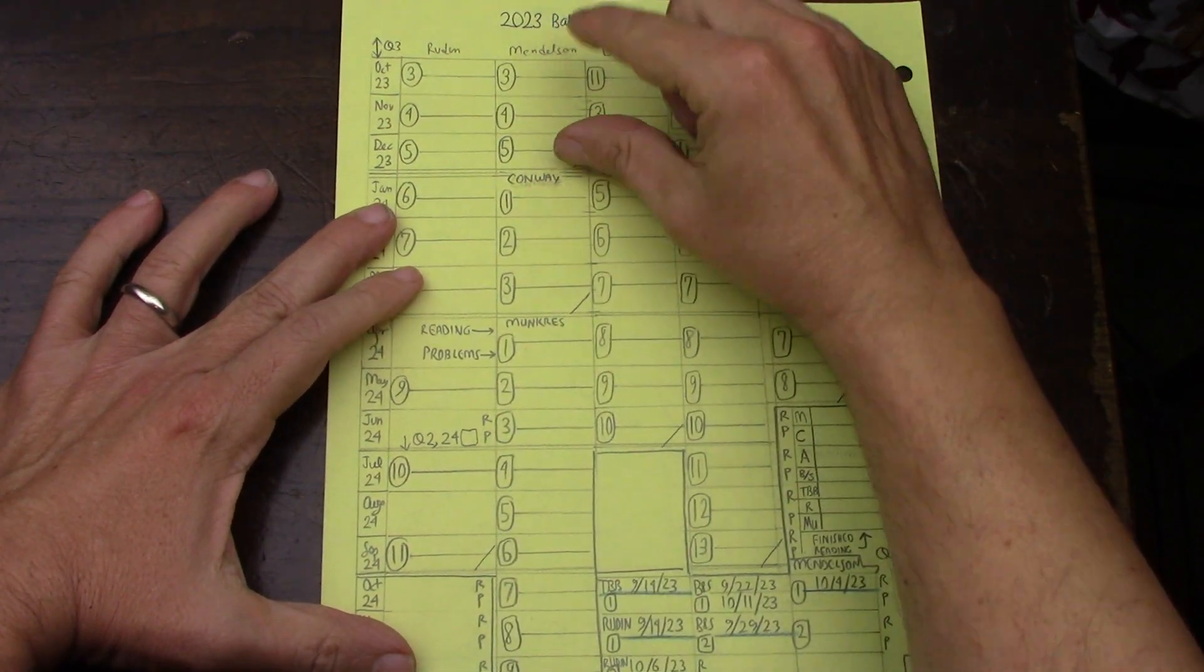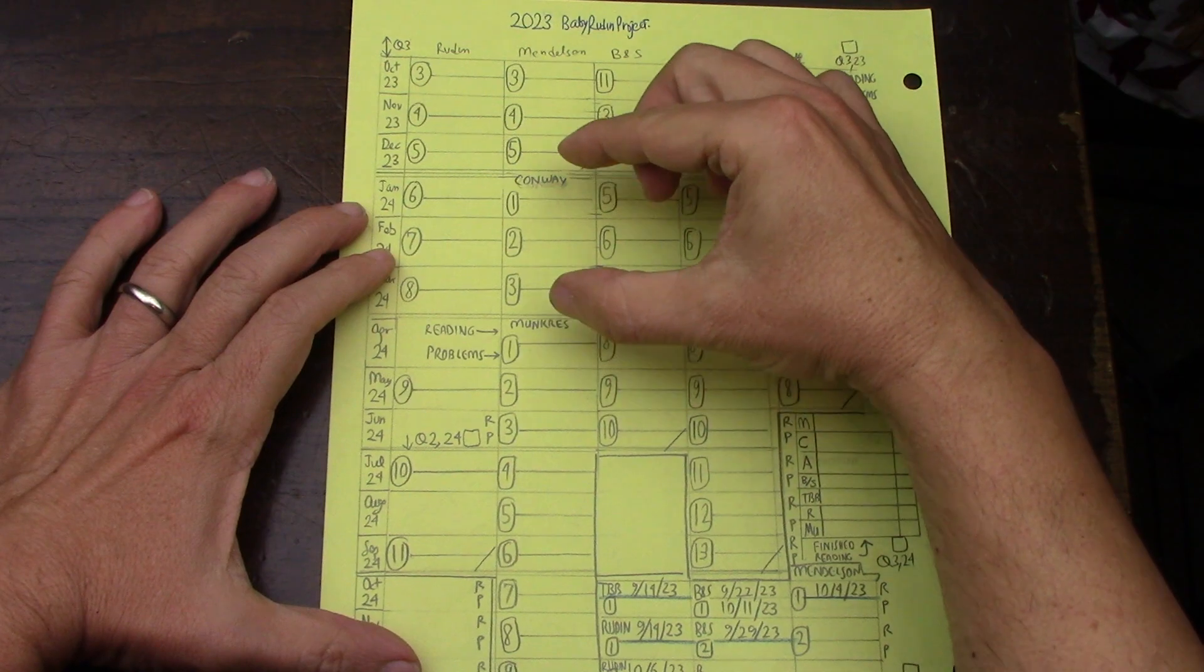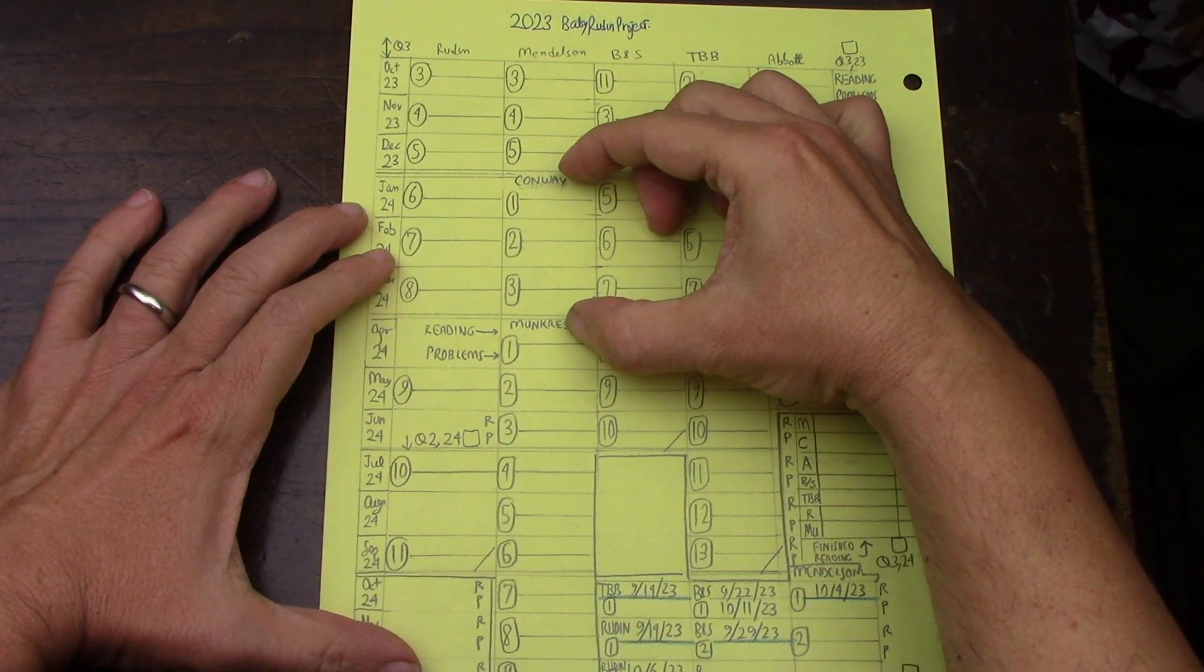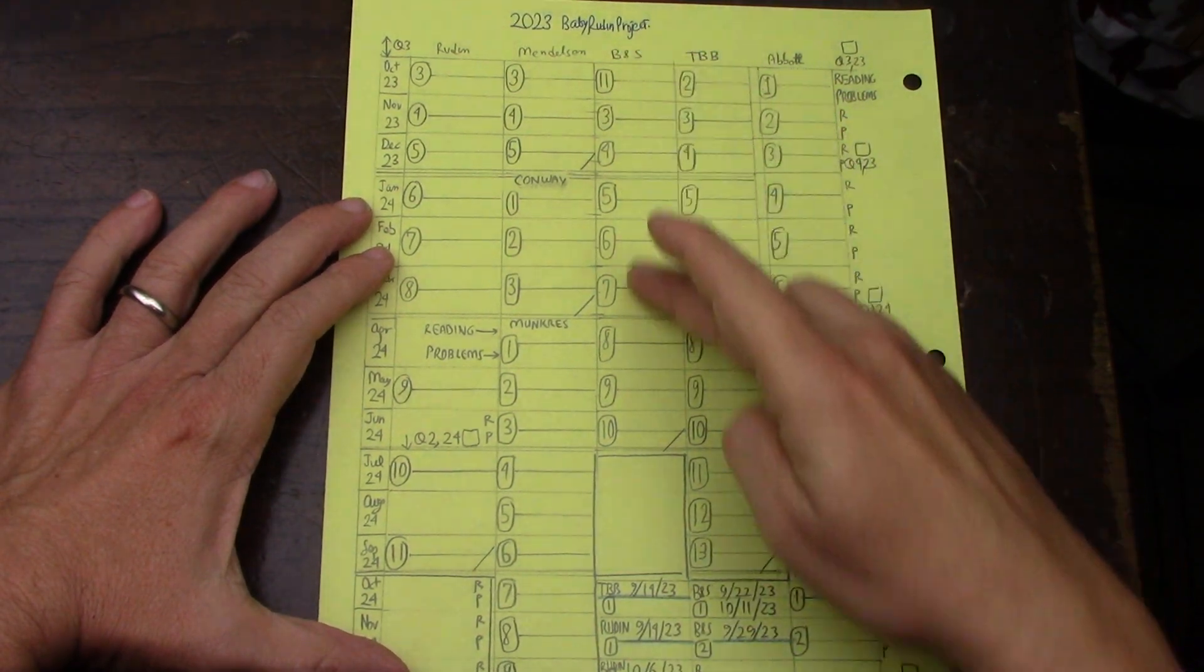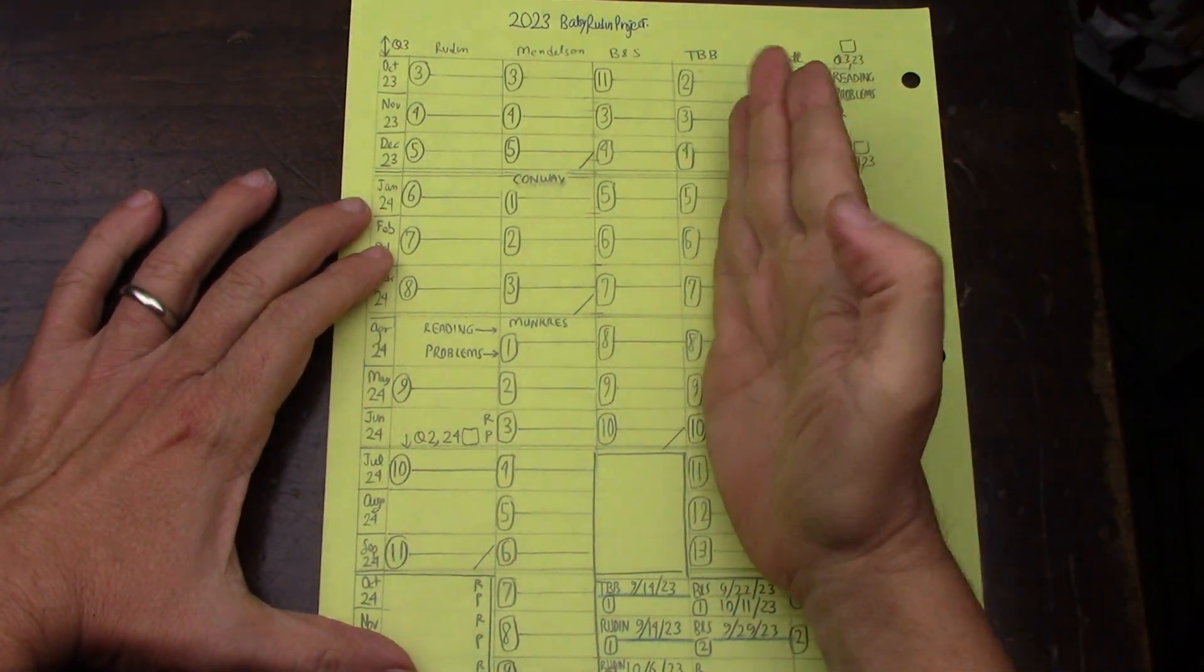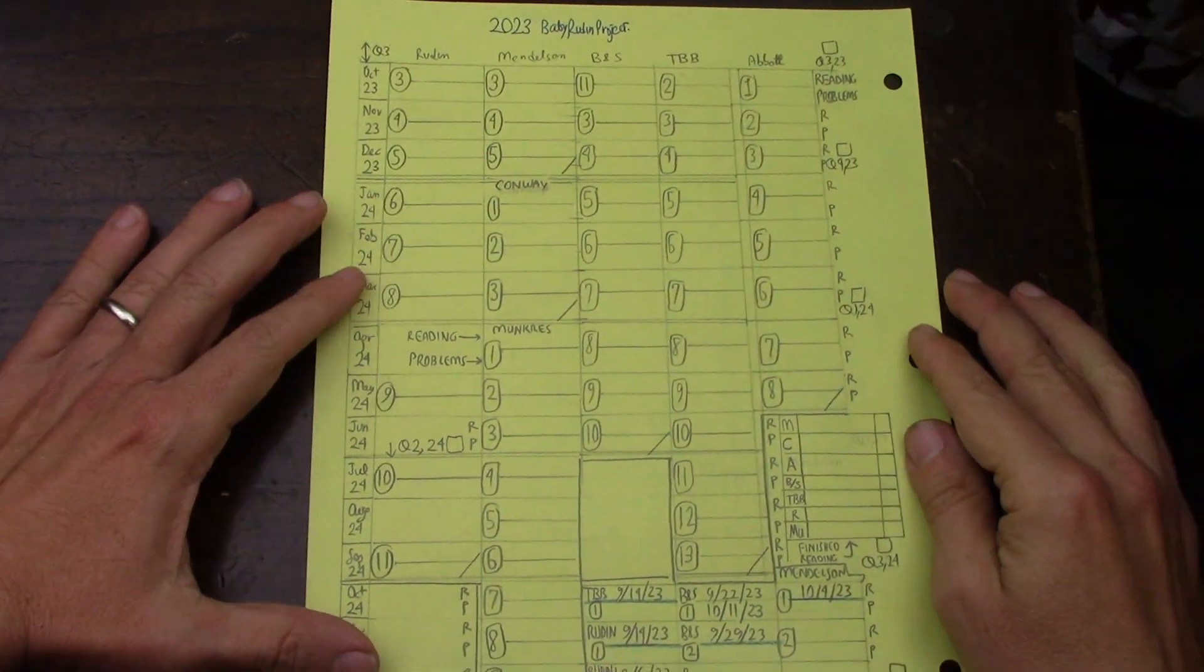which I hope to finish by Christmas, by the end of this year. Then Conway, which is very short, point set topology. And then Monkers, so this whole lane is that. And then Bartle and Sherbert, TBB, which may go out, I'm not sure. And Abbott, which may go out, I'm not sure either.